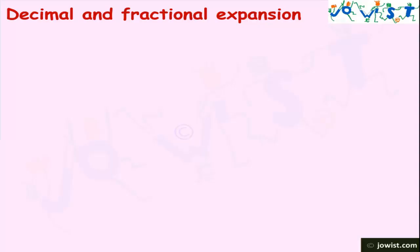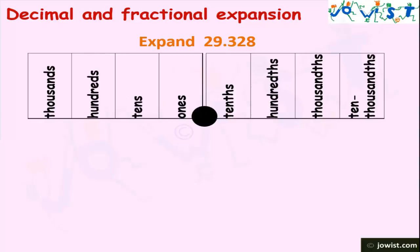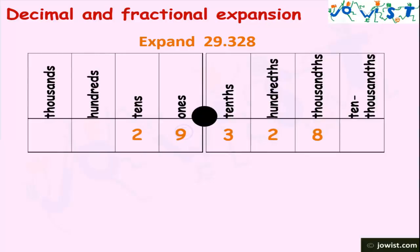Now we will learn expansion of a decimal number. We have the number 29.328. Let's expand this number with the help of a place value chart. We will write the numbers as shown — numbers before the decimal point are written to the left of the decimal point, as we have written 29, and numbers after the decimal point are written to the right, as we have written 328.